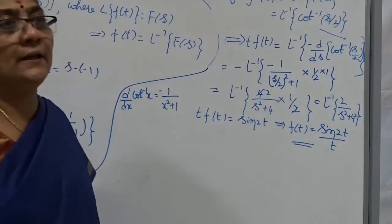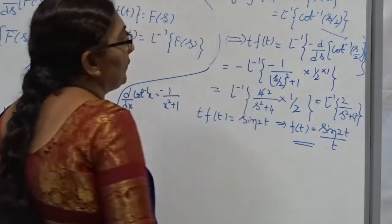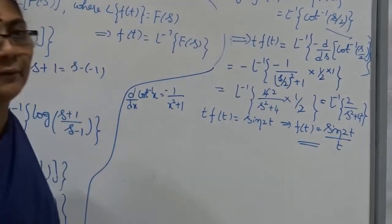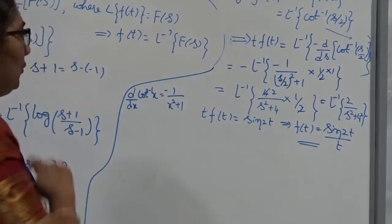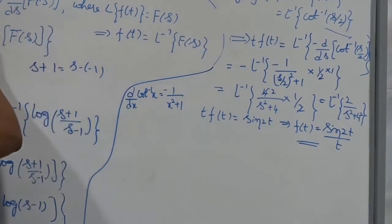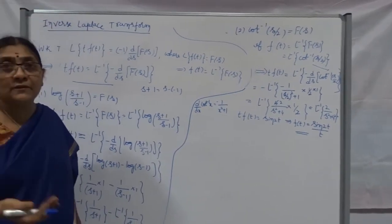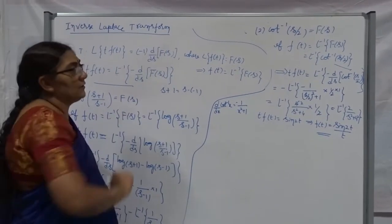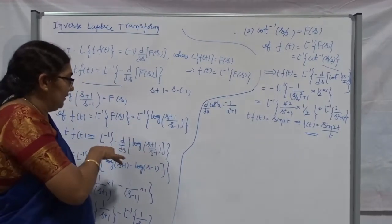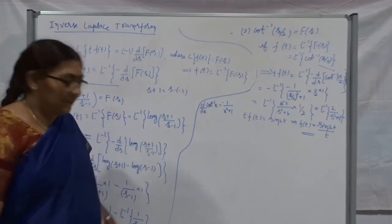This is how to find L⁻¹ of cot⁻¹(s/2). The answer is sin(2t)/t, because cot⁻¹(s/2) is F(s), and once you take the inverse we get sin(2t)/t. Whenever it is not possible to directly use a formula for F(s), differentiate first. In most cases, cot⁻¹ is one of the standard forms where this approach works for inverse Laplace transform.